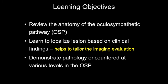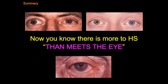We've reviewed the anatomy of the oculosympathetic pathway and hopefully learned to localize lesions based on clinical findings to tailor the imaging evaluation. Remember that many of these patients may need evaluation by a neuro-ophthalmologist for thorough localization. We've looked at lesions encountered at various levels of the oculosympathetic pathway. There is indeed more to Horner syndrome than meets the eye.